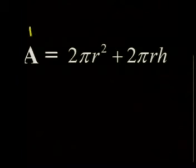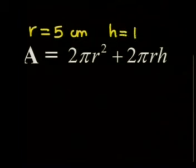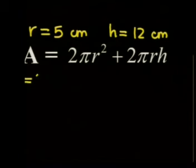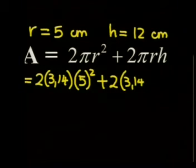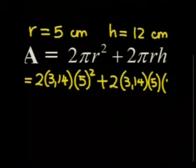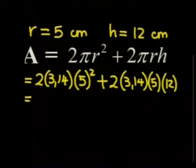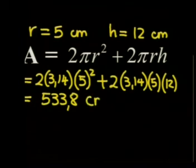Now we have all the information we need to substitute into the formula and find the total surface area. We know that the radius is equal to 5 centimeters and the height is equal to 12 centimeters. Substituting these values in, we get: area equals 2 times 3.14 times 5 squared, plus 2 times 3.14 times 5 times 12. So, our total surface area is 533.8 centimeters squared.